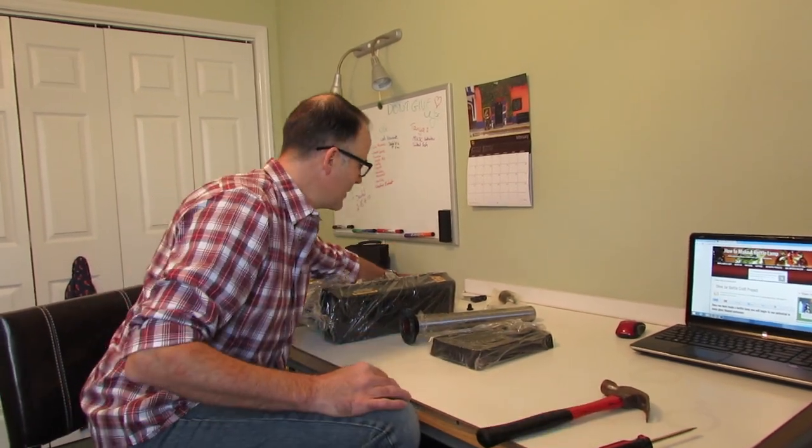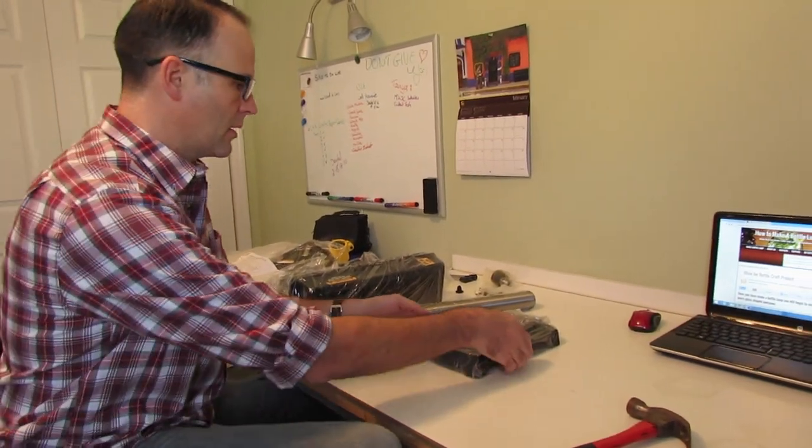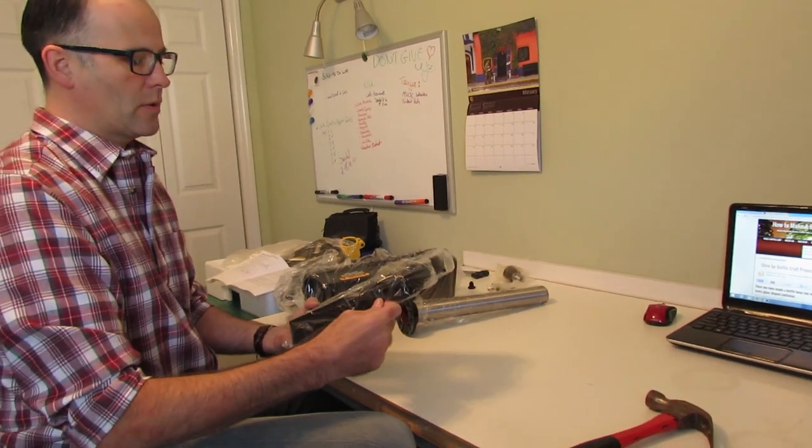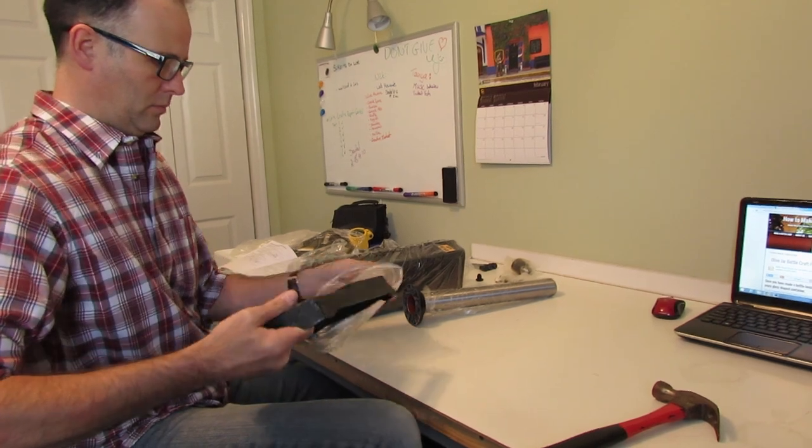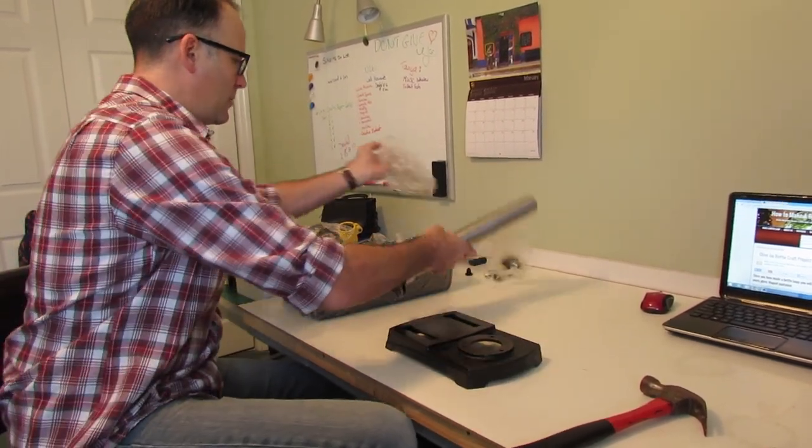I've taken everything out of the box and they only ask for a screwdriver, a hammer and a wrench. So minimal tools. This should be pretty straightforward to put together. First thing you're going to want to do is take your base plate out and we're going to align the column on it.